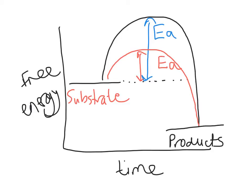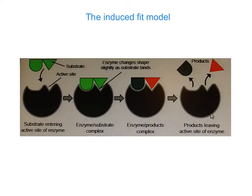The active site can actually change shape ever so slightly once the substrate is bound, building upon the work you did at GCSE with the lock and key theory. It's actually a little bit more complex than that — we have a theory called the induced fit theory. This is the model by which enzymes change shape ever so slightly when they bind onto the substrate, giving a more snug fit, and this is basically the reason how and why enzymes reduce activation energy.